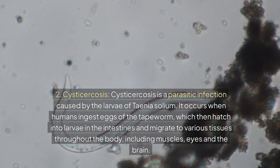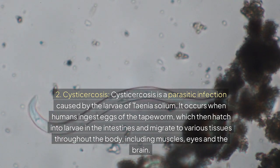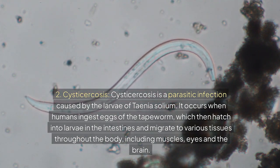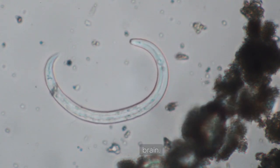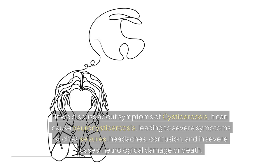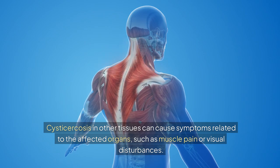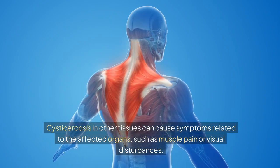2. Cysticercosis: Cysticercosis is a parasitic infection caused by the larvae of Tinea solium. It occurs when humans ingest eggs of the tapeworm, which then hatch into larvae in the intestines and migrate to various tissues throughout the body, including muscles, eyes, and the brain. Cysticercosis can cause neurocysticercosis, leading to severe symptoms such as seizures, headaches, confusion, and in severe cases, neurological damage or death. Cysticercosis in other tissues can cause symptoms related to the affected organs, such as muscle pain or visual disturbances.